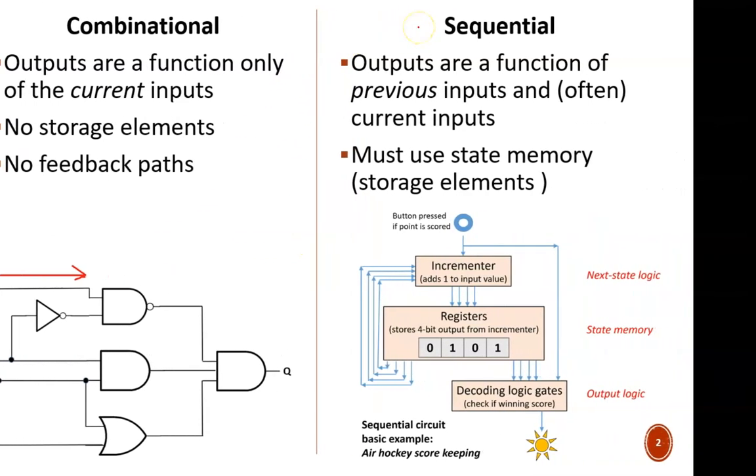Contrast this with the other big category of logic circuits, sequential. We will discuss these at length in the second half of this course, so just a very brief overview here. The outputs of sequential circuits are a function of both current inputs and previous inputs. To achieve this, there must be some form of memory within the circuit. In this small example, there is a register in the middle with a feedback loop that helps determine what the next memory state will be.